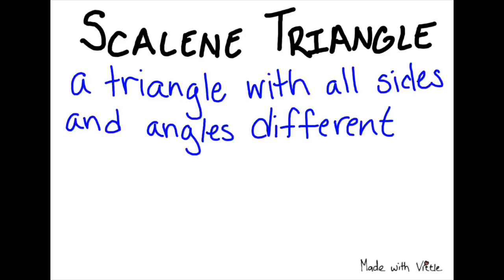The last is a scalene triangle, and this is a triangle where all the sides and angles are different. None are equal to each other.